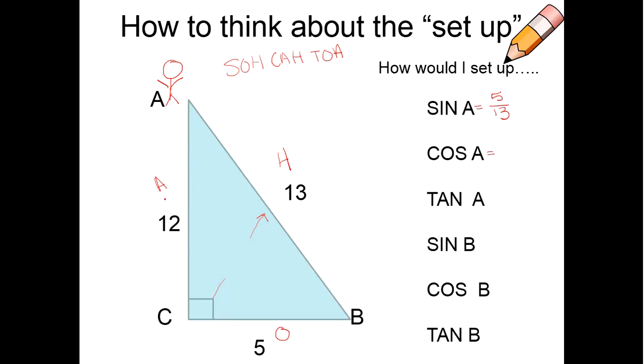Cosine of A would be A over H, because CAH, remember, 12 over 13. And then tangent would be O over A, or 5 over 12.